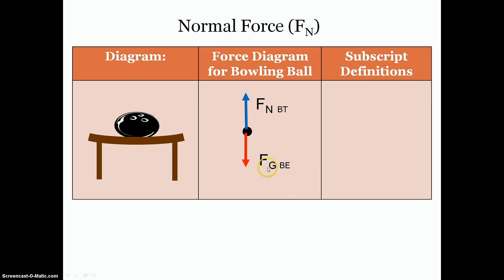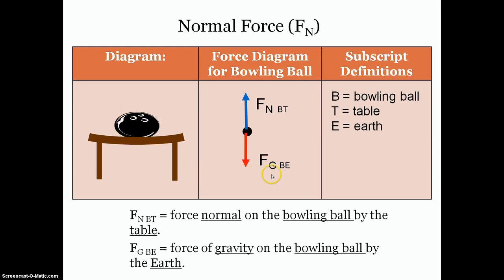We identified two forces. The first was the force of gravity on the ball by the earth, and the second was the normal force. Because the bowling ball has mass, the earth pulls down on it — we label that FGBE: force of gravity on the bowling ball by the earth. F stands for force, the next letter is the type of force, the next is what's feeling the force, and the last is what's causing it. The bowling ball causes the table to flex at the molecular level; the table pushes back up with the normal force, labeled FN — force normal on the bowling ball by the table.